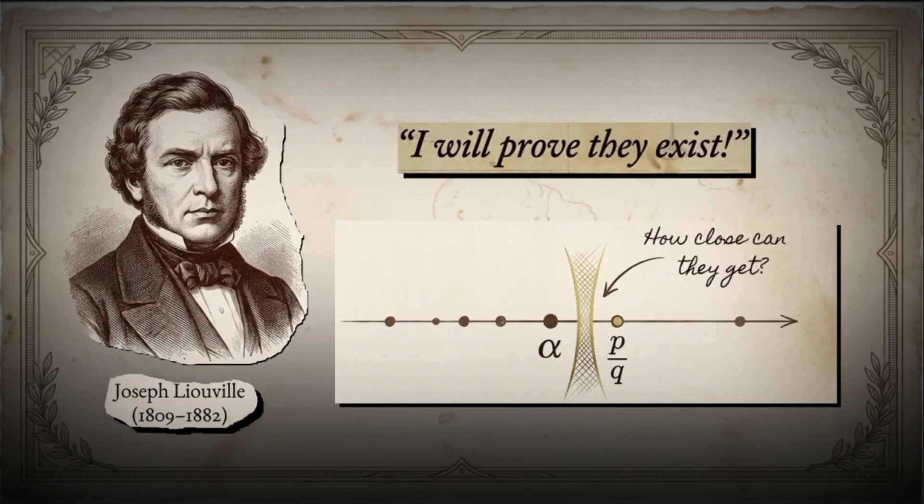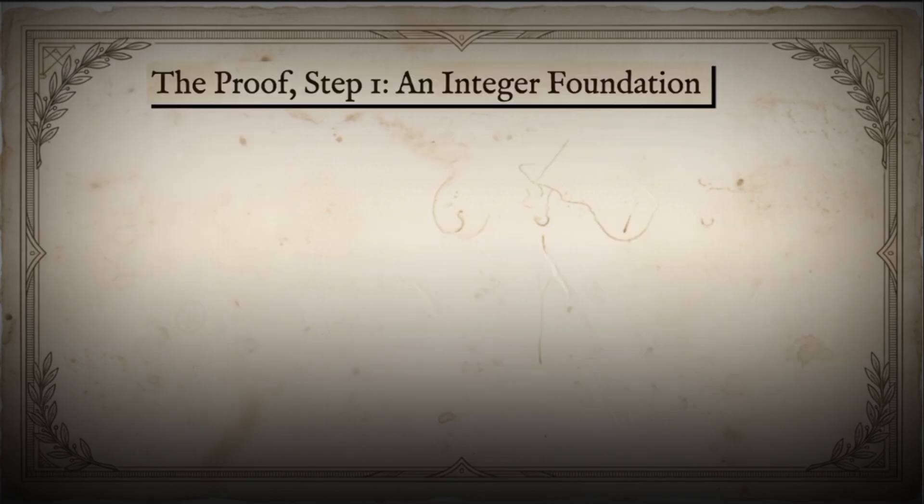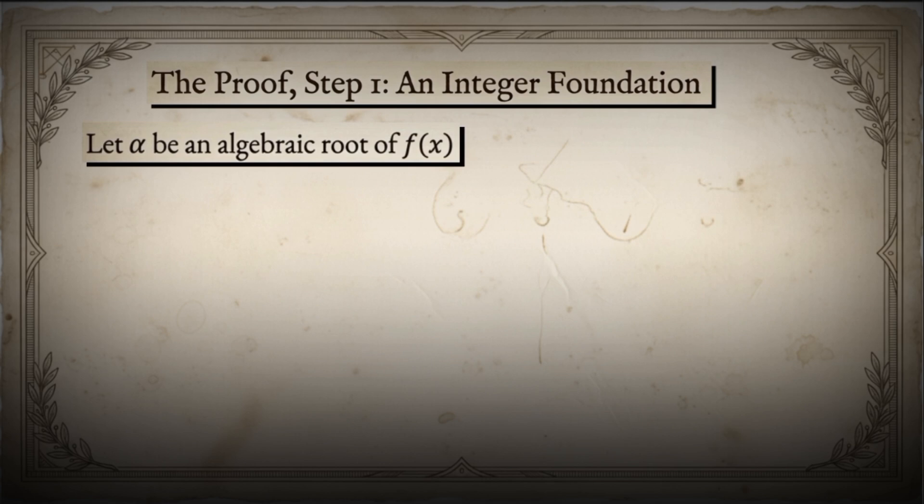They can't be approximated too well by rational numbers. If we can show this limitation exists, then any number that can be approximated too well must be transcendental.